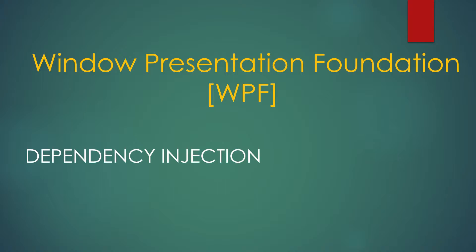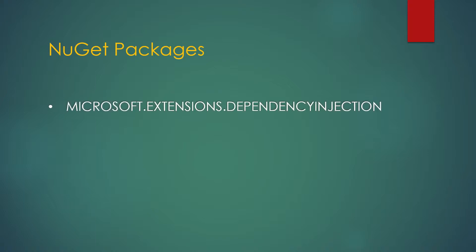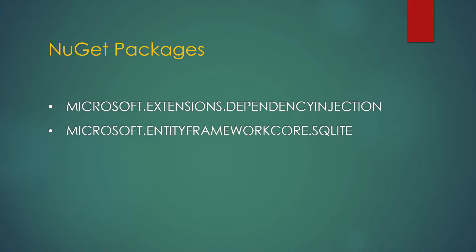We are going to build a .NET Core WPF application using a NuGet package called Microsoft.Extensions.DependencyInjection. This package is available for both standard framework and .NET Core. The second package we are going to use is Microsoft.EntityFrameworkCore.Sqlite. The demo will use a SQLite database in the backend with a DbContext, and we will register that DbContext in the dependency framework's service collection to see how the framework helps inject it into the application.